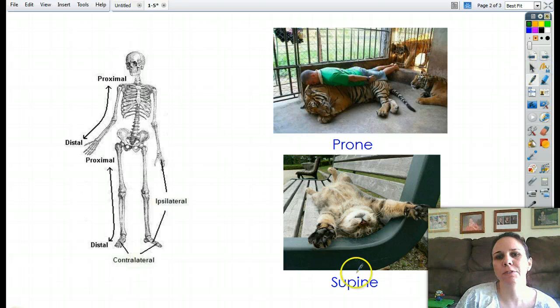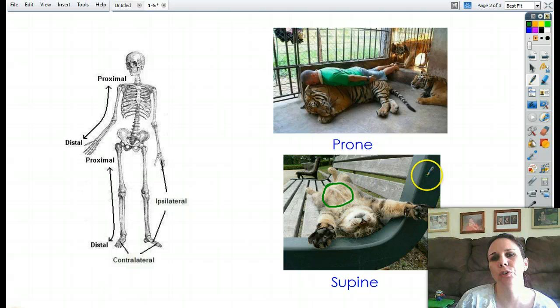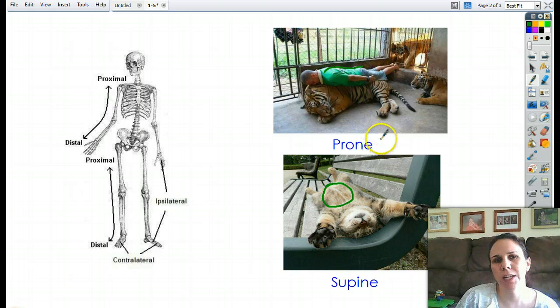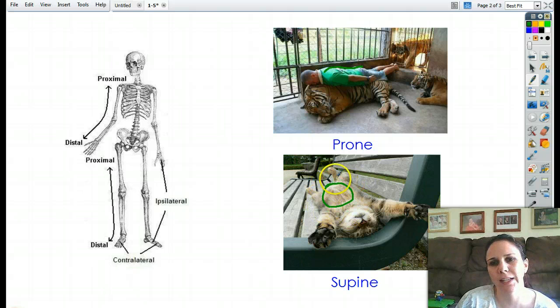And then we have supine, which just means flat on your back. Most operations are done in the supine position because of easy access to all your internal organs. There are some, like if you did any sort of back surgery for scoliosis, you would be lying on the table prone. But it also makes it difficult to get at your airway. But in the supine position, it straightens out your airway, makes it easy to put in a breathing tube, and allows easy access to most of your organs in here.